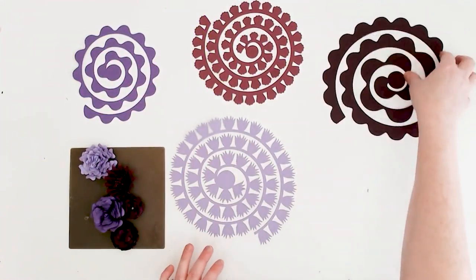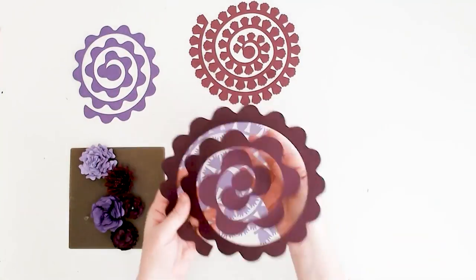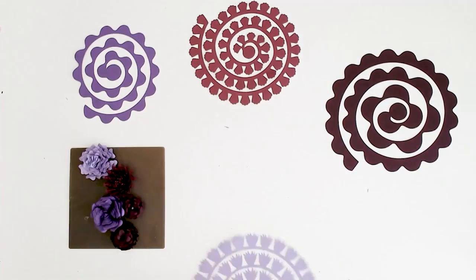First, use your cutting machine to cut out the rolled paper flower template into cardstock. The template looks like a big spiral.